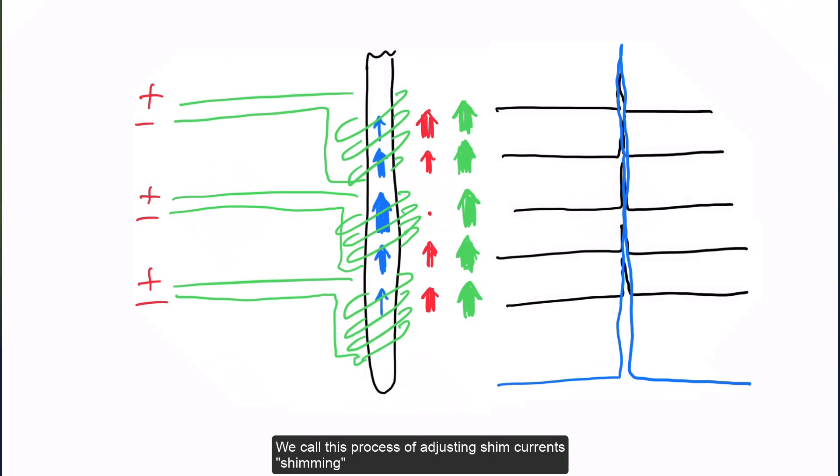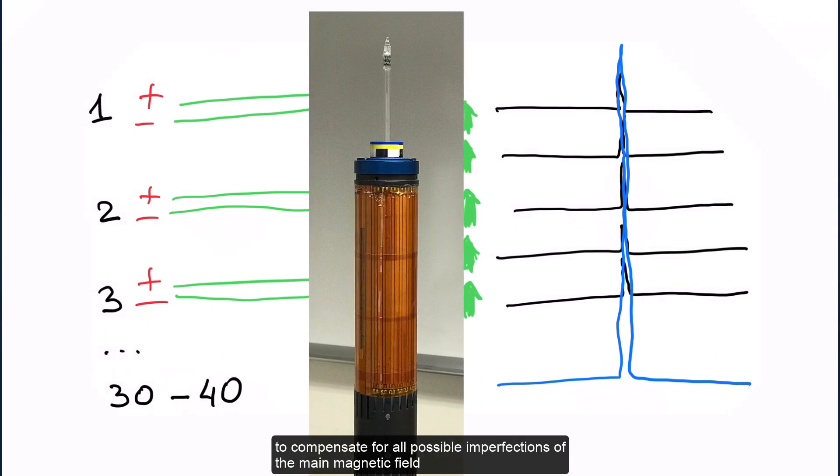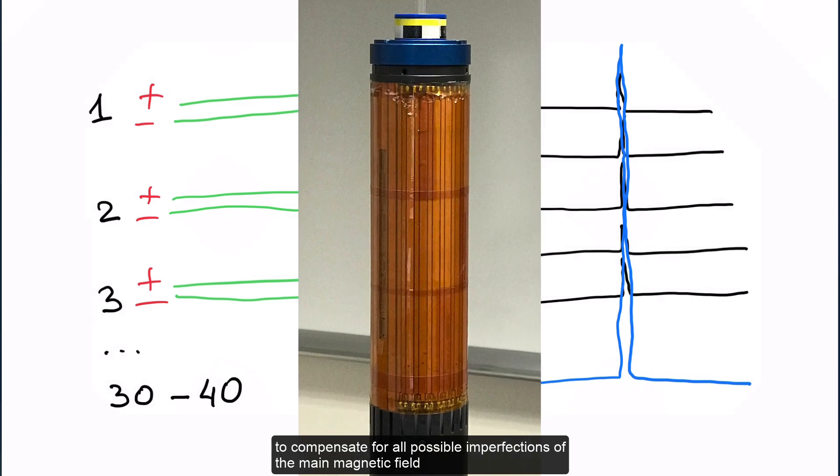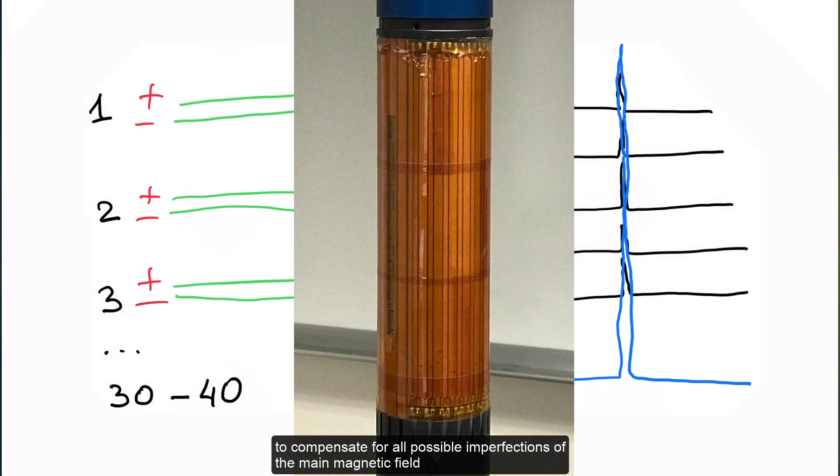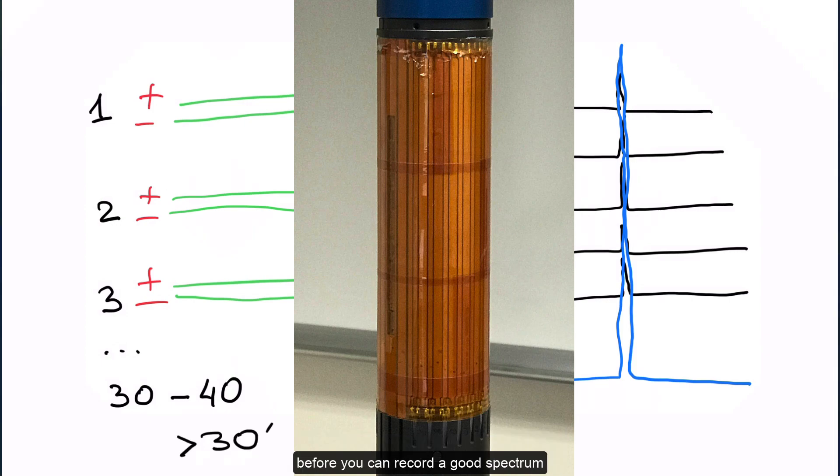We call this process of adjusting shim currents shimming. Modern magnets may have up to 30 or 40 shim coils to compensate for all possible imperfections of the main magnetic field. In the past, shimming was a part of the NMR spectroscopist's job. It could take 30 minutes to manually shim the sample before you can record a good spectrum.